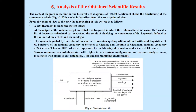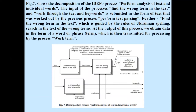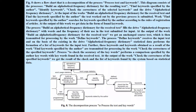The context diagram in the first hierarchy of diagrams of IDEF0 notation shows the functioning of the system as a whole. Figure 5 shows the first step of decomposition. Figure 6 shows a data flow diagram illustrating the process of data exchange between the works: find stop words, discard stop words, and the derived database of terms and parts of speech. Figure 7 shows the decomposition of the IDEF0 process performing analysis of text and individual words. Figure 8 shows a flow chart that is the decomposition of the process: process text and keywords.